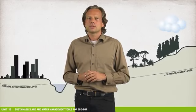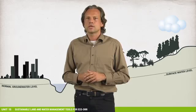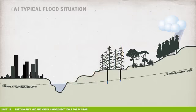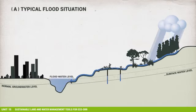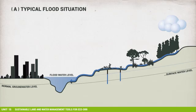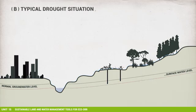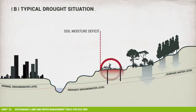Let us have a closer look at the linkages of the water cycle to floods and droughts. Strong rainfall events create surface runoff causing downstream inundations. Prolonged droughts diminish water available to agriculture, people, and ecosystems in soil and groundwater.